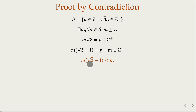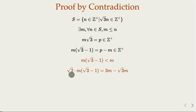Now, is this integer inside S? By definition, S contains all numbers such that square root of 3 times that number is an integer. So what is square root of 3 times m(square root of 3 minus 1)? That equals 3m minus square root of 3 times m, which is 3m minus p — an integer minus an integer. The whole thing is an integer, which means this quantity belongs to S.